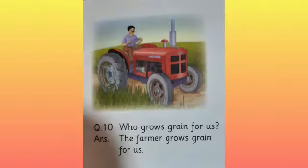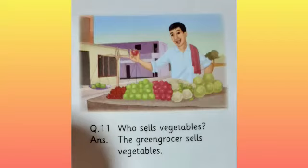Who grows grain for us? The farmer grows grain for us. Anaj korn ugata hai? Farmer. The farmer grows grain for us.